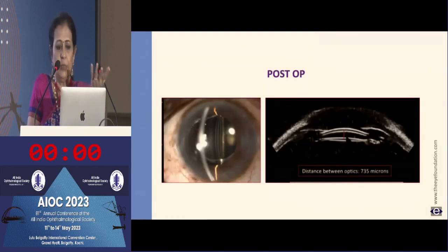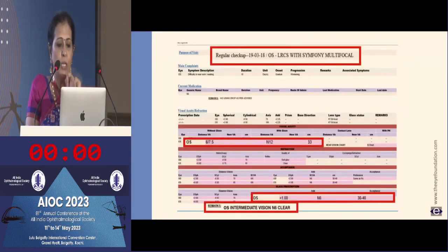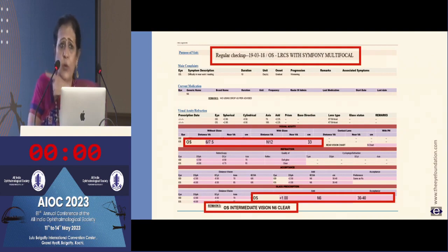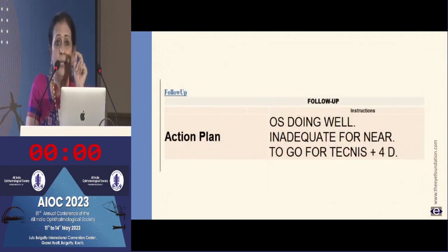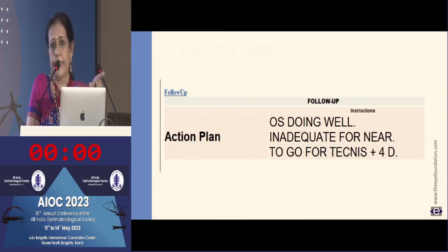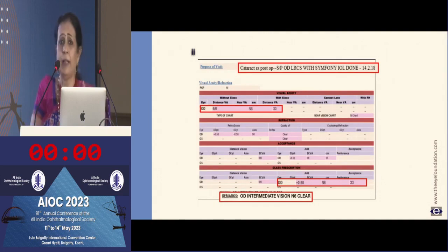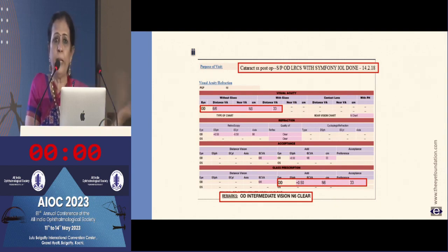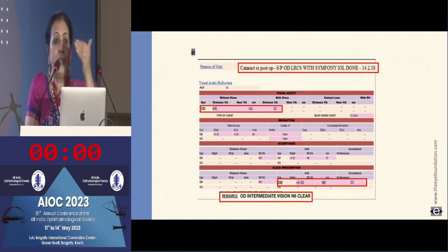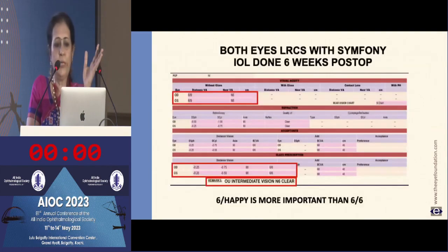Post-operatively the vault looks fine. The second eye often gives you a chance: a patient with a Symphony multifocal and plus one residual error who was an avid reader benefited from a Tecnis multifocal with a plus four add implanted in the second eye. Another patient with a Symphony and a small plus error benefited from micro monovision correction — more myopia in the other eye. The difference in myopia between the two eyes should not exceed 0.75 diopters, as beyond that there will be loss of stereopsis and quality of vision.